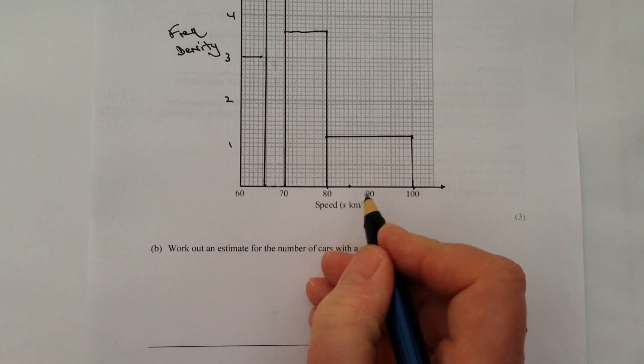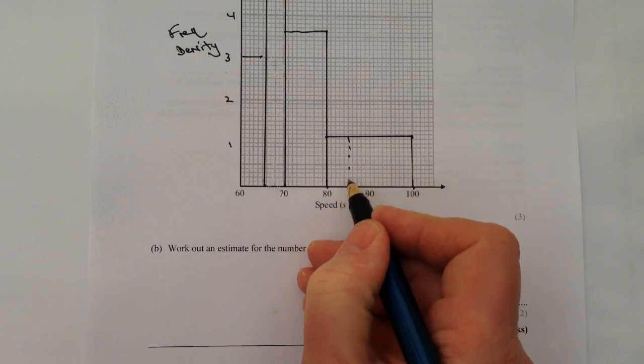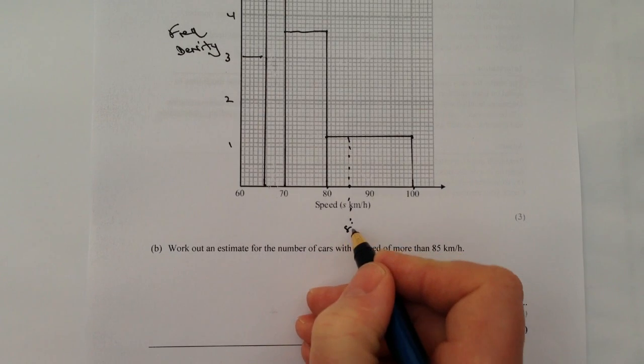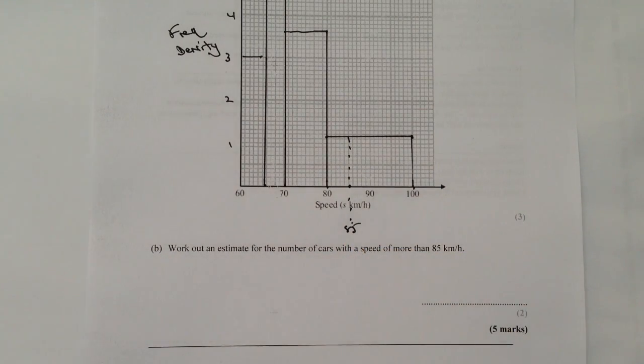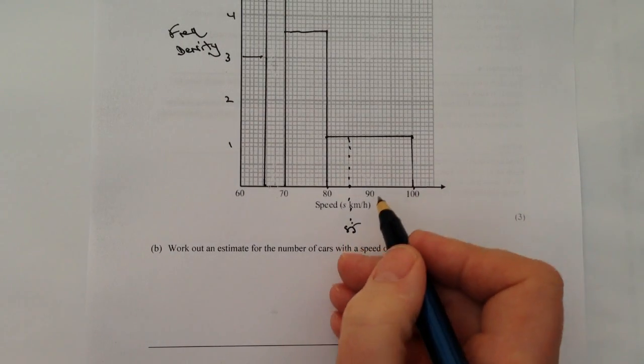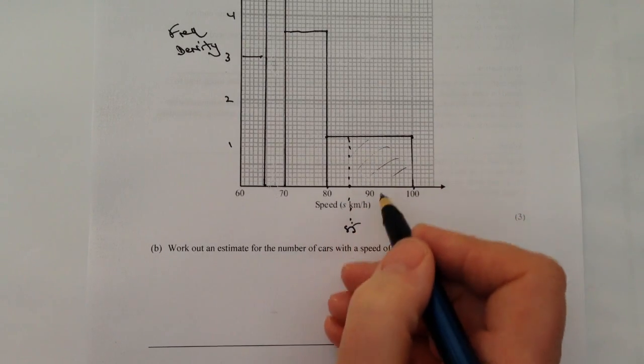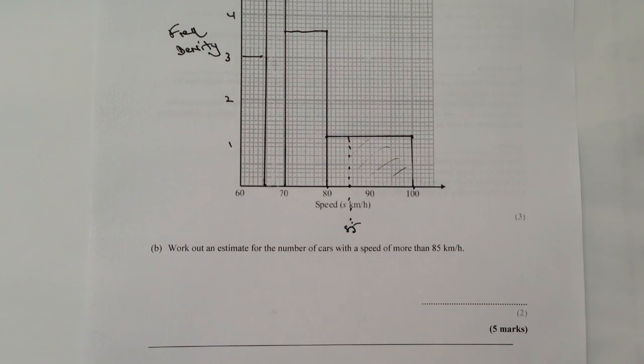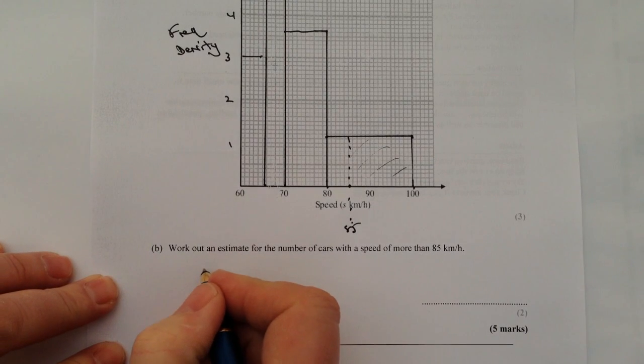So if you imagine here, if I put 85 there which is the kilometers per hour speed, and then really what I'm interested in is everything within this block here.